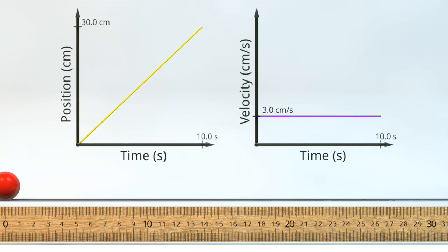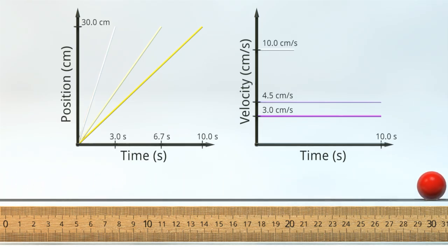But now let's speed things up and see what happens to the graphs. Consider how the slope of the position graph is steeper, and the value of the constant velocity becomes larger. Let's try that again with an even faster ball. It's even steeper now.